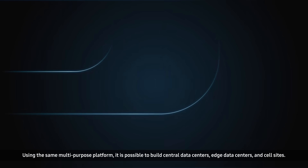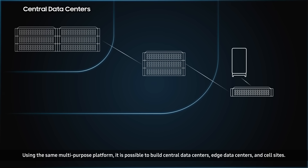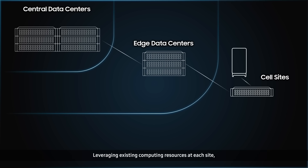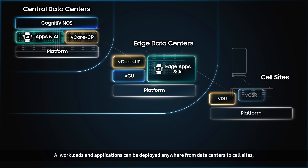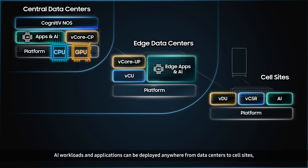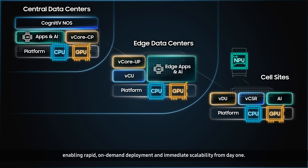Using the same multipurpose platform, it is possible to build central data centers, edge data centers, and cell sites. Leveraging existing computing resources at each site, AI workloads and applications can be deployed anywhere from data centers to cell sites, enabling rapid on-demand deployment and immediate scalability from day one.